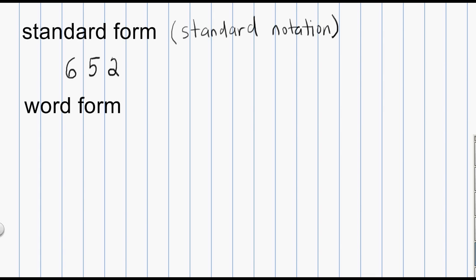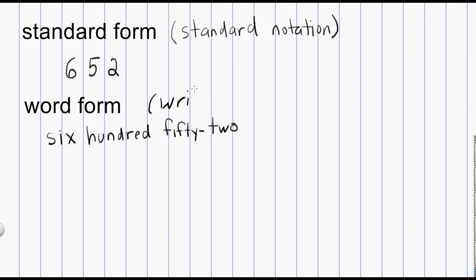Another form of a whole number is the word form, and the word form is just what it sounds like. It's where I take the number and write it out word for word, exactly as I would say it. So in the case of the number 652, I would write out six hundred fifty-two. Word form can also be referred to as written form or written notation.